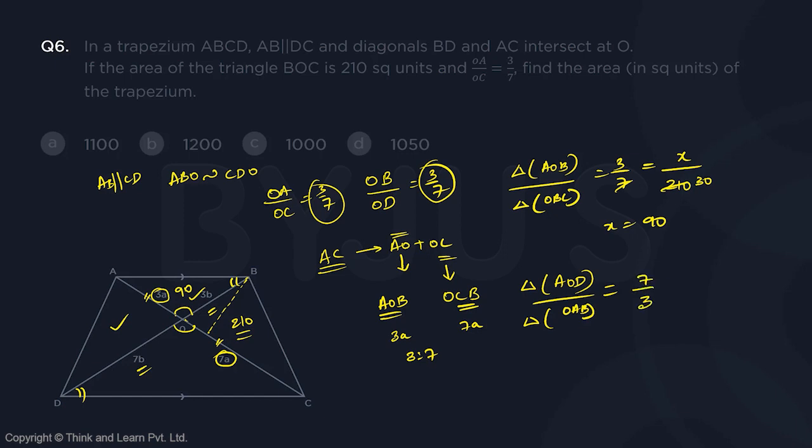So triangle AOD by triangle OAB should be the ratio of their bases. That is 7 by 3 should be equal to, now, this is unknown. Let's call it as Y by 90. So you will get Y again as 210. So this is 210.